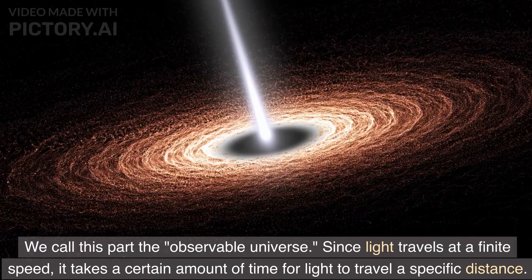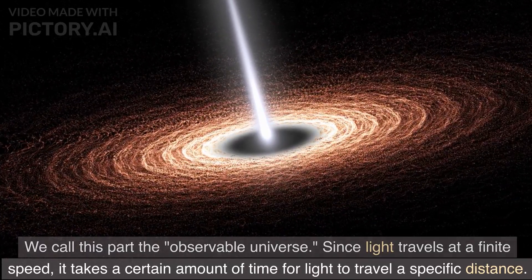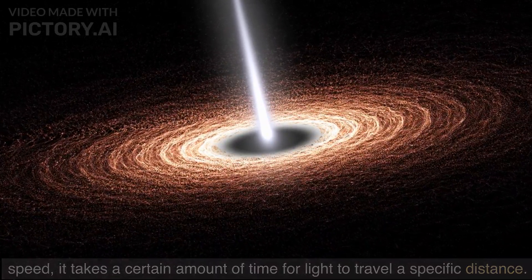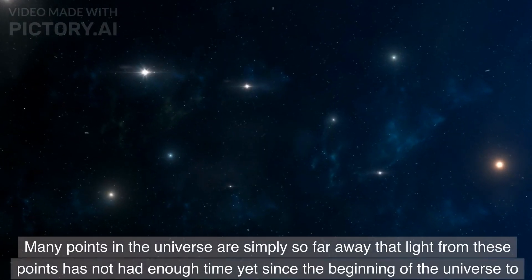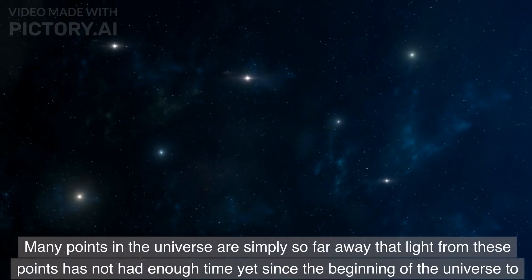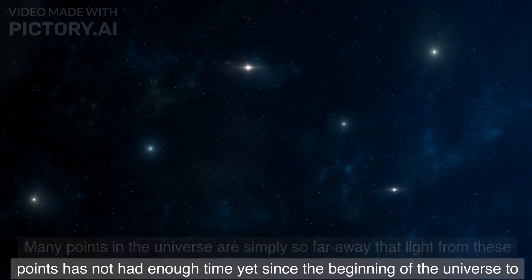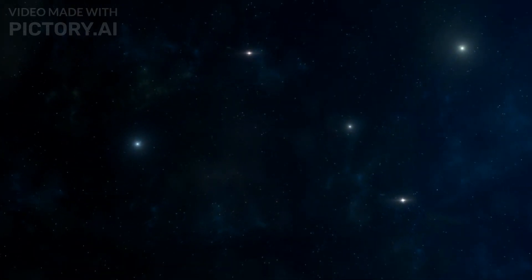Since light travels at a finite speed, it takes a certain amount of time for light to travel a specific distance. Many points in the universe are simply so far away that light from these points has not had enough time yet since the beginning of the universe to reach Earth.